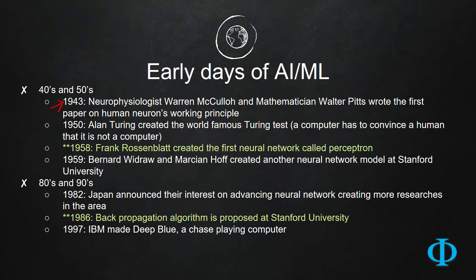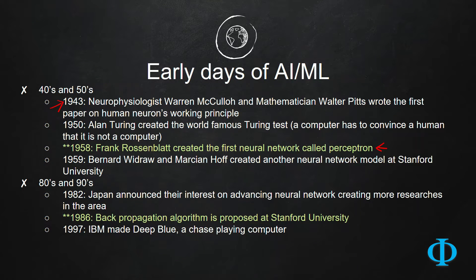With this type of discoveries and inventions and interest, machine learning started advancing. A very great breakthrough happened in 1958, when scientist Frank Rosenblatt created the first neural network called Perceptron. Following Rosenblatt's discovery, Bernard Widrow and Marcian Hoff created another neural network model at Stanford University.